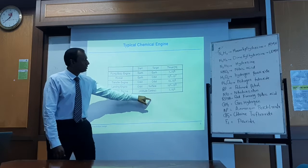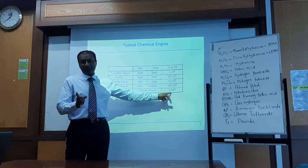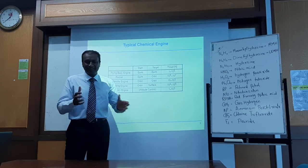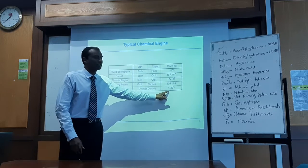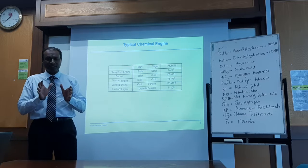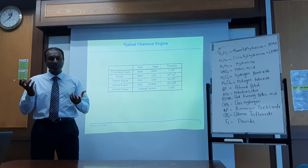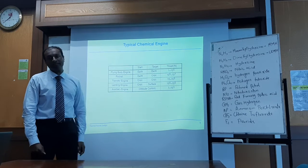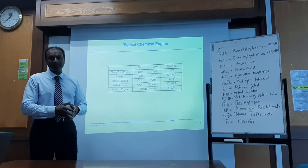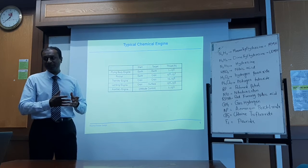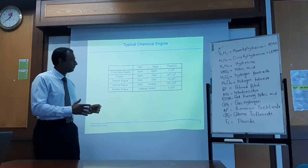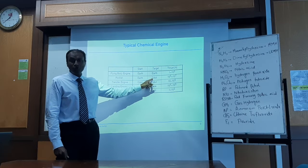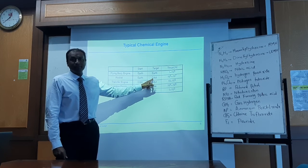Auxiliary engines for attitude control are very small — not for translational but rotational motion — producing very small thrust. To go from Earth to orbit, a very high delta-V is needed, so delta-V maximum is always our target. This also applies to Earth orbit, Moon orbit, Mars orbit, or interplanetary mission orbits.